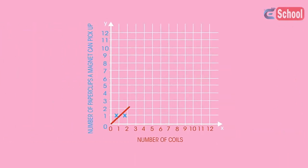See how the strength of an electromagnet changes with the number of coils. More coils, the stronger the electromagnet, and so the more paper clips you can pick up.